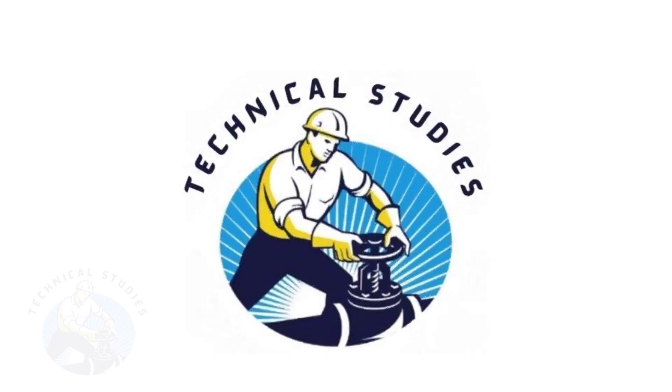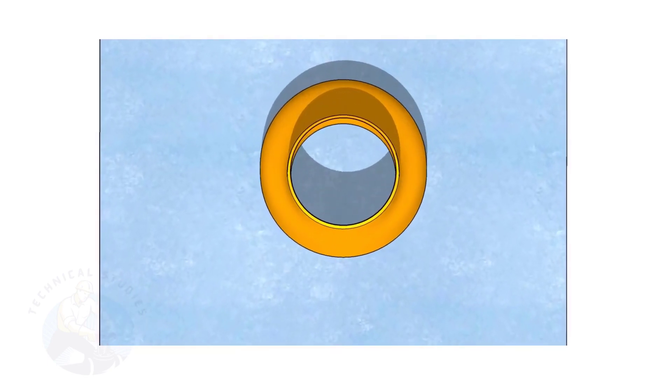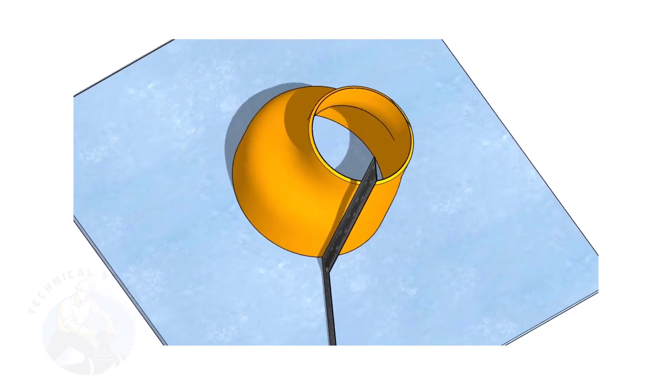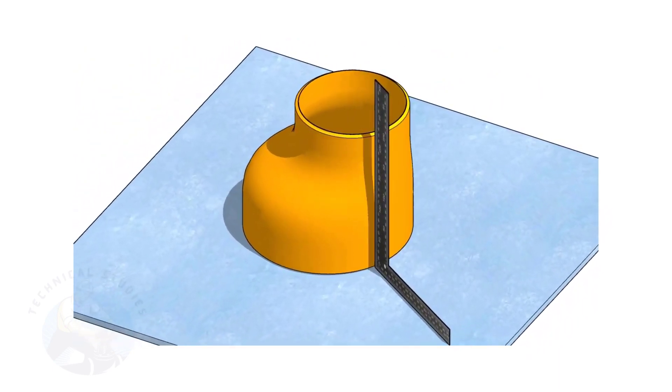Welcome to Technical Studies. Fitting an eccentric reducer to a pipe that is already fitted to another fitting like a flange, tee, elbow, etc., is a little tricky.